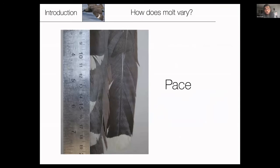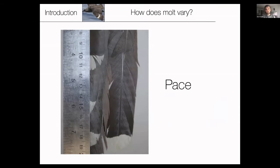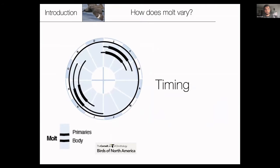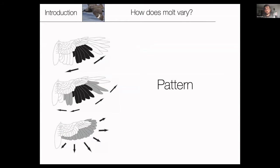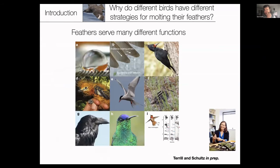When we look at molt strategies, I'm talking about different ways that molt varies. Molt can vary in pace — how quickly a feather grows in. Maybe extent: molts can be complete where all feathers are replaced, or partial where only some feathers are replaced. Timing: when molts happen, how long they take, how many happen in a year. And pattern: what is the order in which feathers are replaced during a molt? I'll be going into each one of these in more detail throughout the talk.